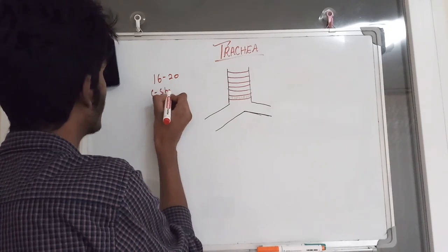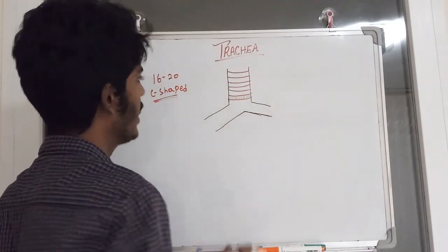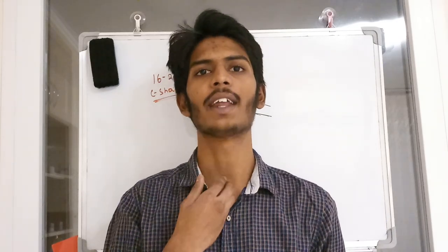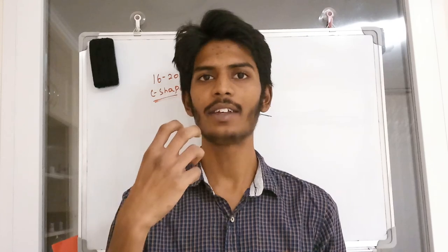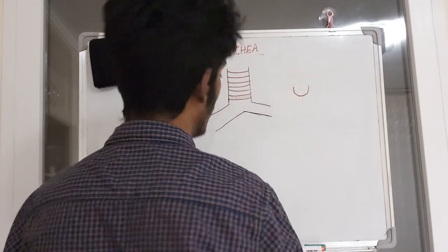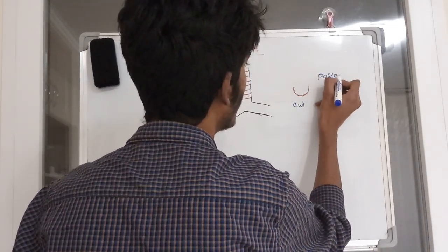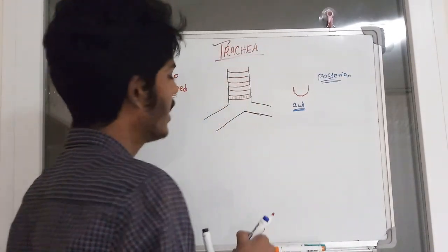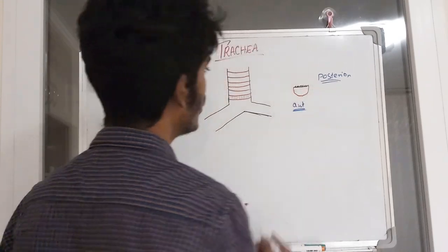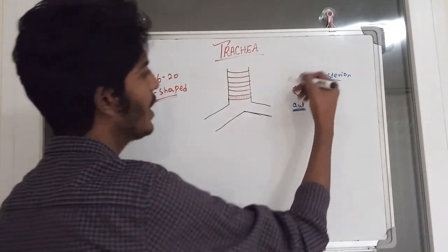Looking at the trachea from the anterior surface, you can see the C-shaped rings. The anterior surface has the open C-shaped ring, while the posterior surface is closed by a muscle called the trachealis, which joins the two ends of the C-shape.